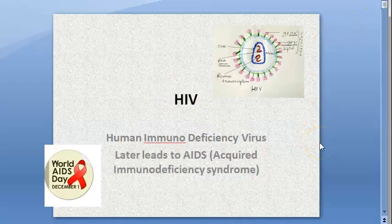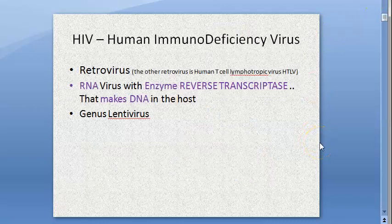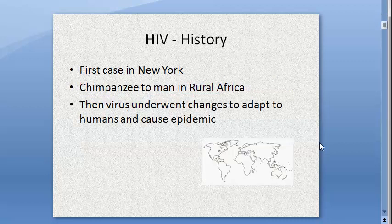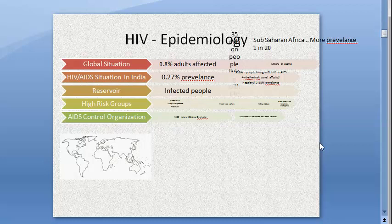What we have seen so far: HIV is an RNA virus with reverse transcriptase, so it is called a retrovirus. It came from chimpanzee to man. The first case was reported in New York, but they discovered that the chimpanzee-to-man transmission happened in rural Africa. The global epidemiological situation is 35 million people affected, millions of deaths, and 0.8% of adults affected globally.